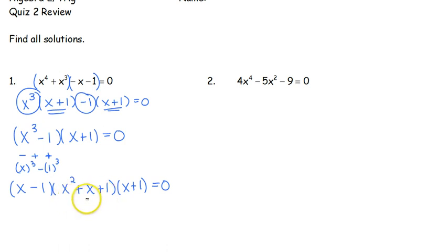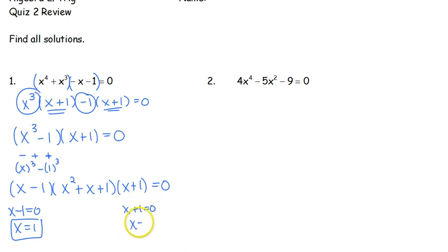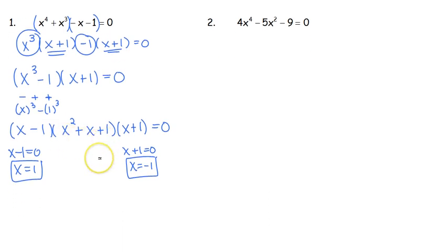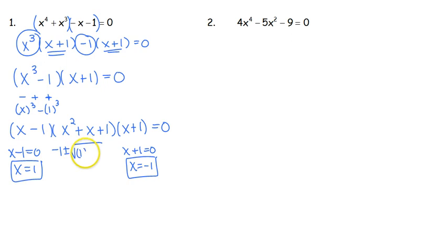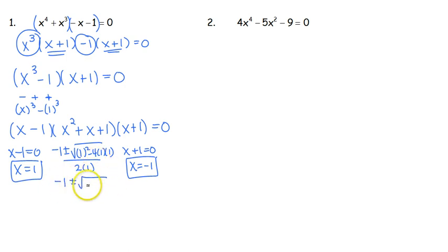That x squared plus x plus 1 can't factor any further. So when we are solving, we set x minus 1 equal to 0 — we've got x equal to 1, that's one solution. We've got x plus 1 equals 0, giving us a solution at x equals negative 1. The more difficult one is that middle piece, x squared plus x plus 1. Since we can't factor, our options are either using the quadratic formula or completing the square. Using the quadratic formula: opposite of b, plus or minus the square root of b squared minus 4 times a times c, all over 2 times a. So we've got negative 1 plus or minus the square root of 1 minus 4, which is negative 3, all over 2.